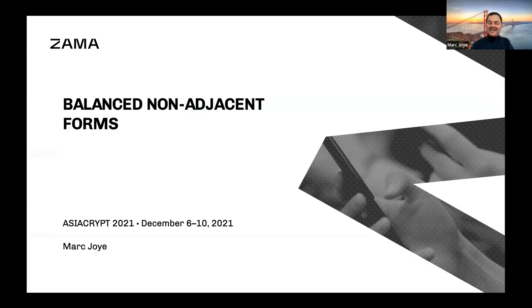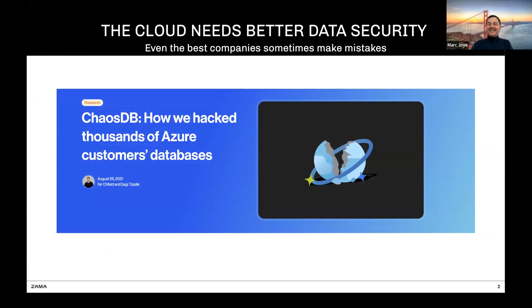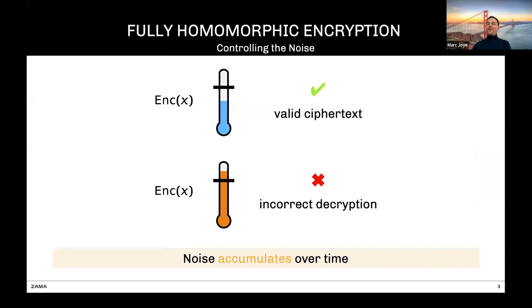This session is, at least in part, on homomorphic encryption. Sometimes homomorphic encryption is called the holy grail of crypto, and indeed it's a beautiful technology. For example, it could be a solution to address data breaches. What is nice with FHE — fully homomorphic encryption — is that data is end-to-end encrypted: at rest, during transit, and even during its processing. Unlike traditional cryptography, there is no need to decrypt to process the data.